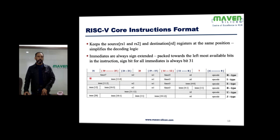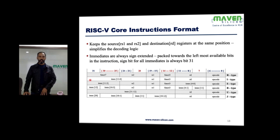So the operation happens between the constant, which is 32 bits, and the value in RS1, which is also 32 bits. We need to sign extend this immediate value. The sign bit will always be bit 31. All immediates are always sign extended and packed towards the leftmost available bits in the instruction, which is bit 31, so we use bit 31 for sign extension.